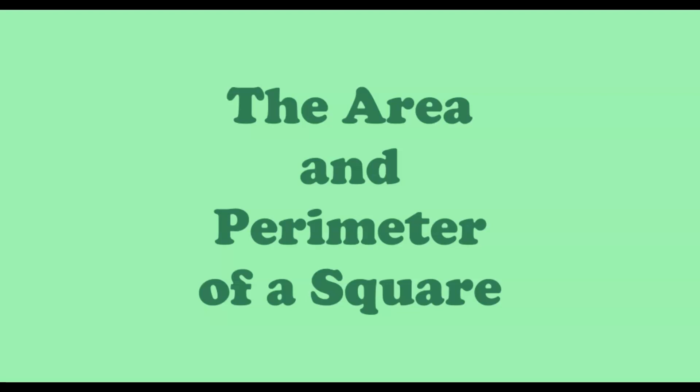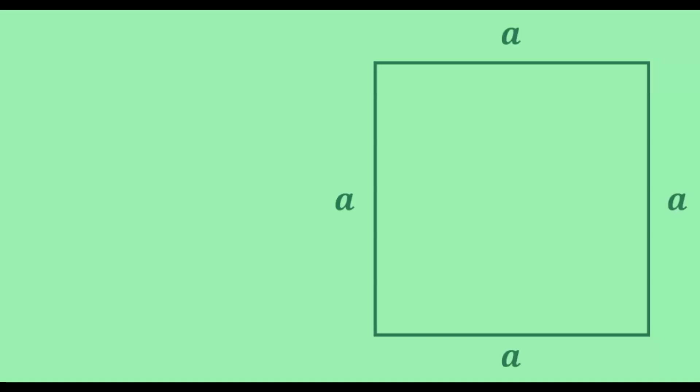In this video, we are going to learn how to determine the area and perimeter of a square. First of all, let us consider a square. Let the length of each side of the square be a.